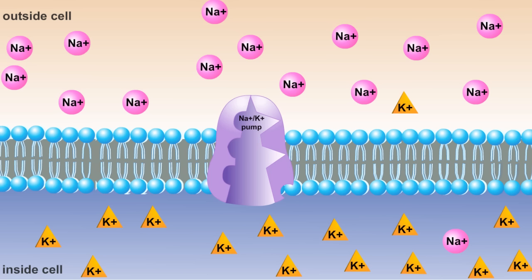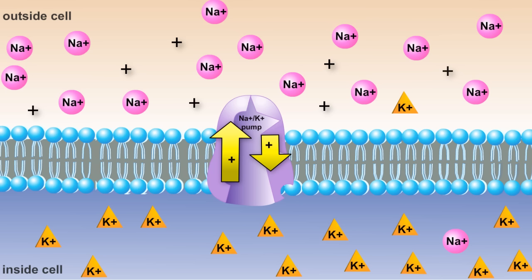Since both sodium and potassium ions have a positive charge, this unequal movement causes an electrical gradient to develop across the plasma membrane of the cell. A number of cellular processes, including the generation of nerve impulses, use this electrical gradient.